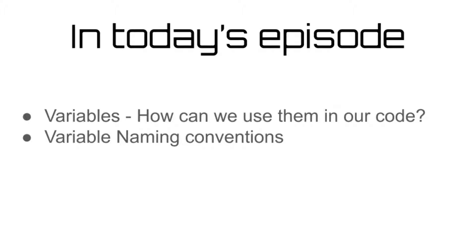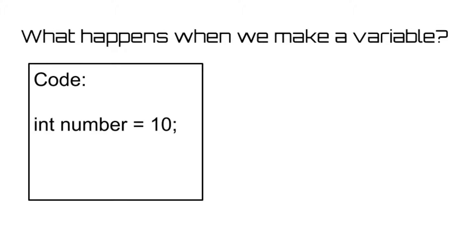To start, let's go over what happens when we define a variable. When we write a line of code which initializes a variable and that code is executed, the computer essentially creates a little space in memory that stores your variable name and its contents so that it can be referenced later.